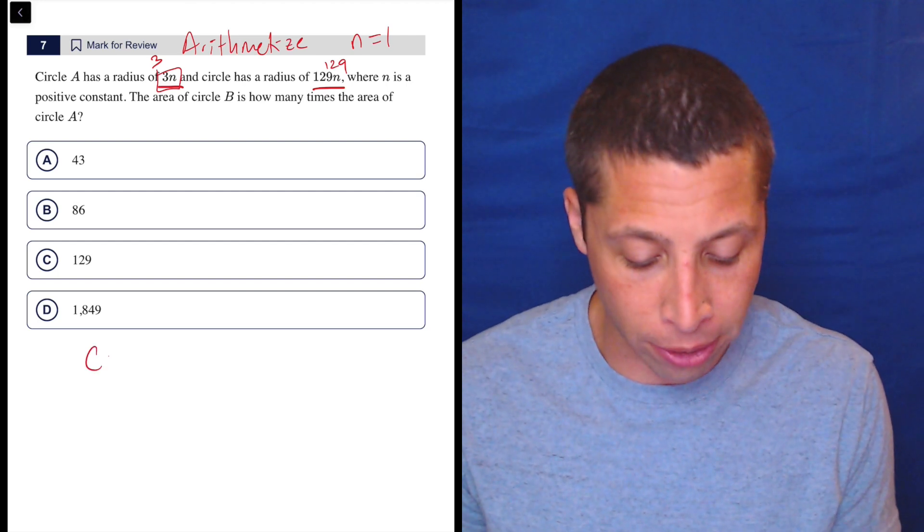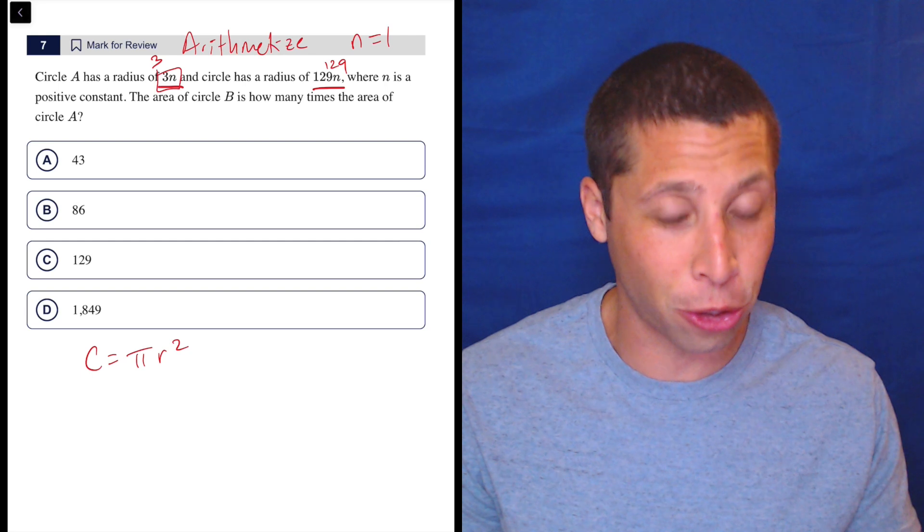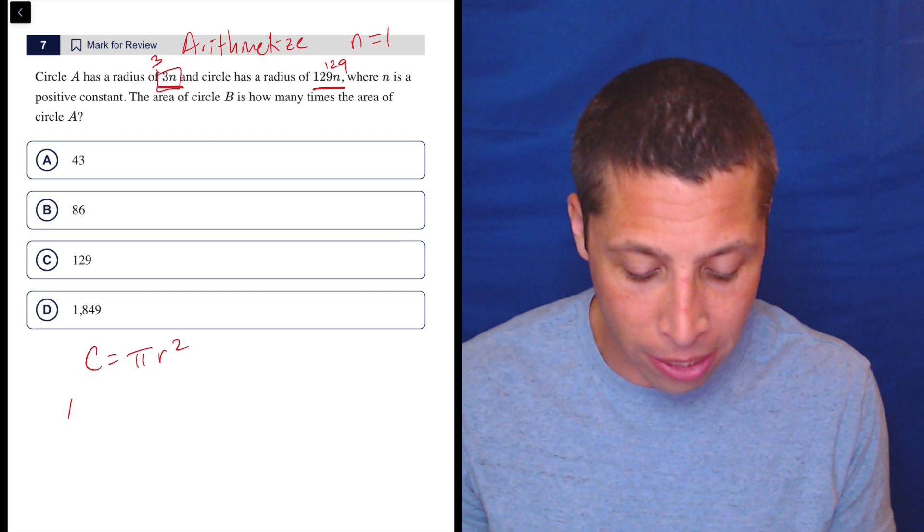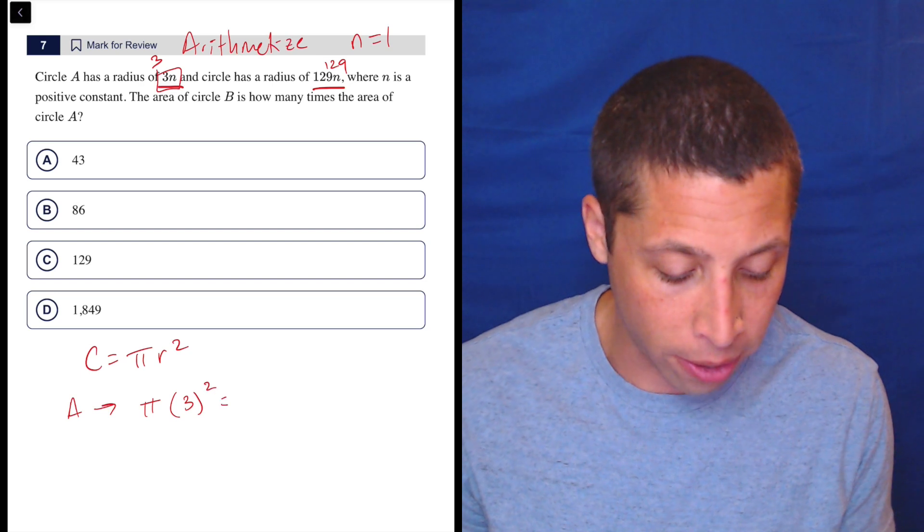Now we can use the circle area formula, which you should memorize as pi r squared, but it is in the reference chart if you need it. And now we can just do circle A and circle B. So A is going to be pi times 3 squared. That's 9 pi.